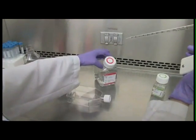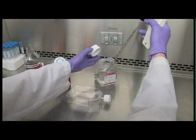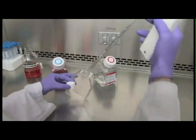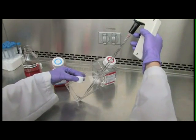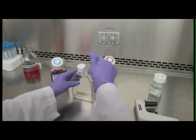Rinse the cells with a balanced salt solution, such as DPBS. Make sure to use a salt solution without calcium and magnesium, as these may inhibit your cell dissociation reagent.